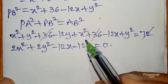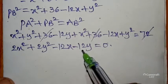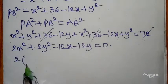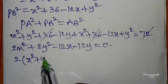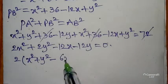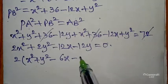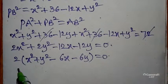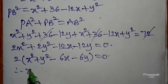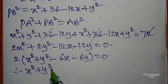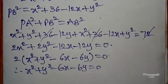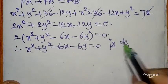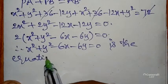Taking 2 as common: 2(x² + y² − 6x − 6y) = 0. Dividing both sides by 2, we get x² + y² − 6x − 6y = 0. This is the equation of the locus.